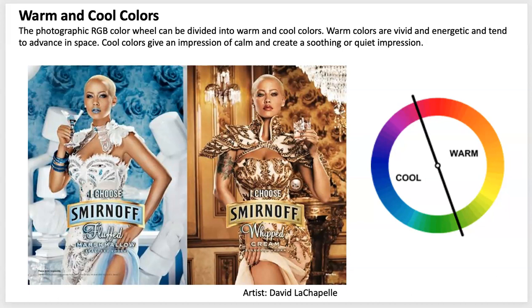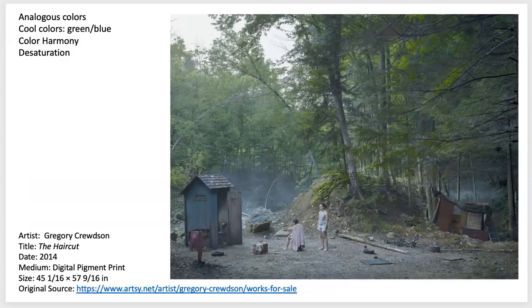Let's talk a little bit about warm and cool colors. The photographic RGB color wheel can be divided into warm and cool. Warm colors are oftentimes more vivid and energetic, and cooler colors are going to be more calm. Here I found an image by David LaChapelle — an ad for Smirnoff vodka — with a cool theme and a warm theme. You can see the difference between the two images and how they evoke something slightly different, even though there's the same model and similar dress. There's an elegance here and a kind of icy feeling, which is what they're trying to communicate.